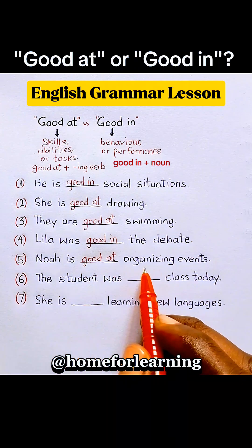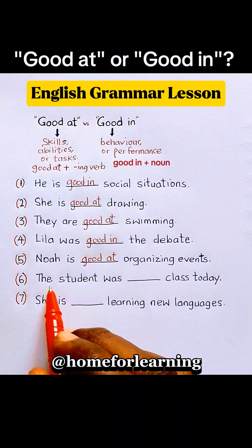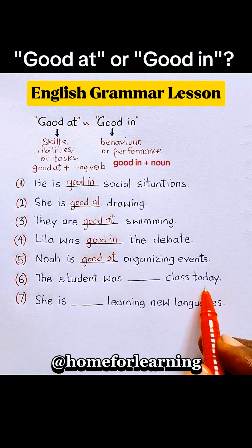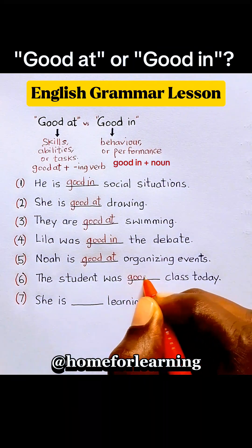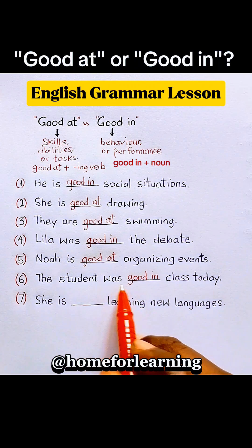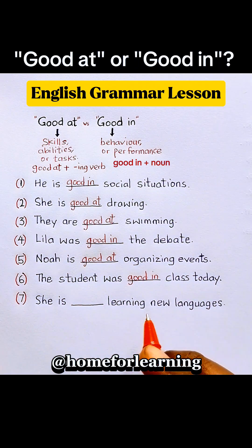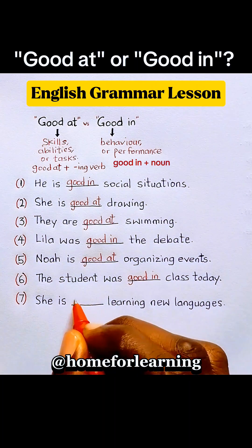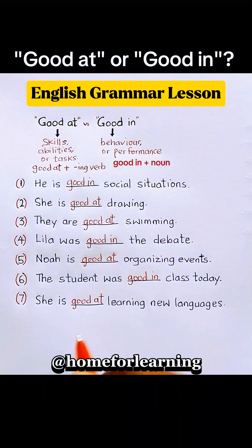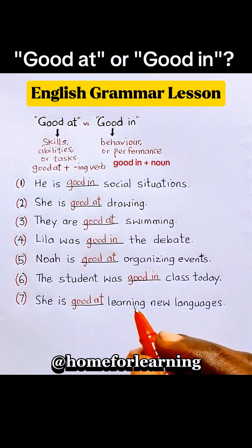Noah is good at organizing events. This student was blank class today. Here we don't have any ing verb — we simply have a noun, 'class' — therefore we use 'good in': the student was good in class today. She is blank learning new languages. We have the gerund 'learning,' and learning is a task, so we use 'good at': she is good at learning new languages. Thank you very much for watching — kindly like and share this video.